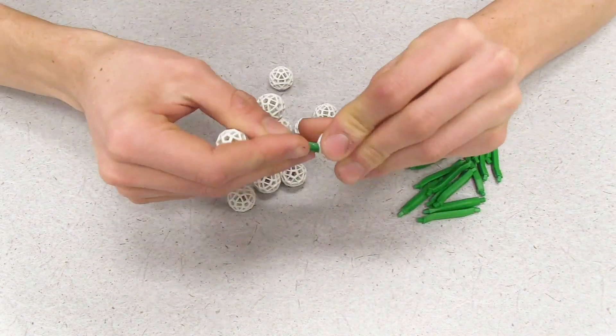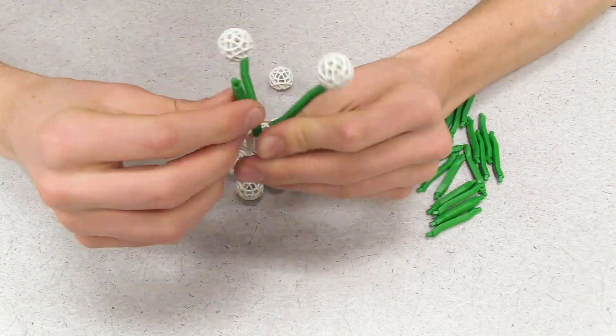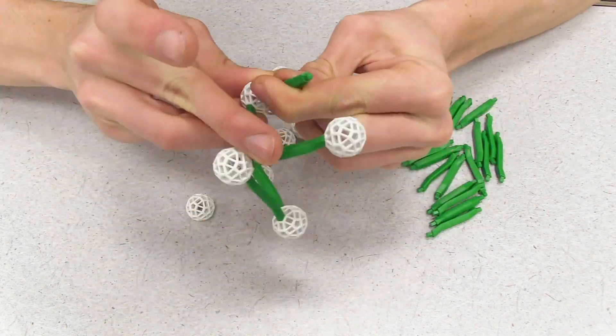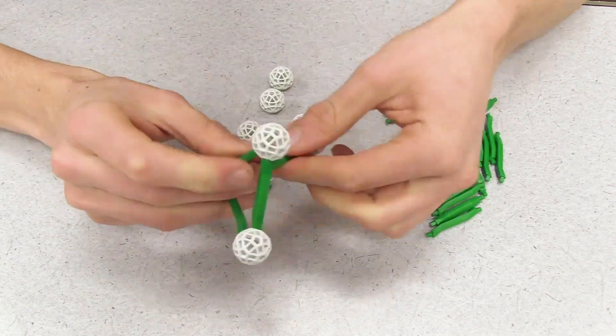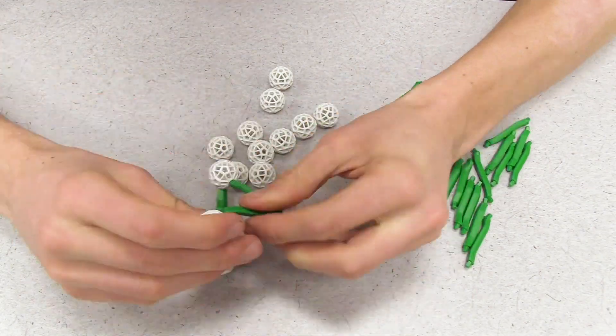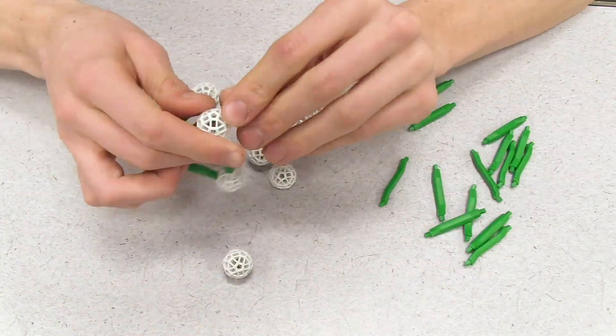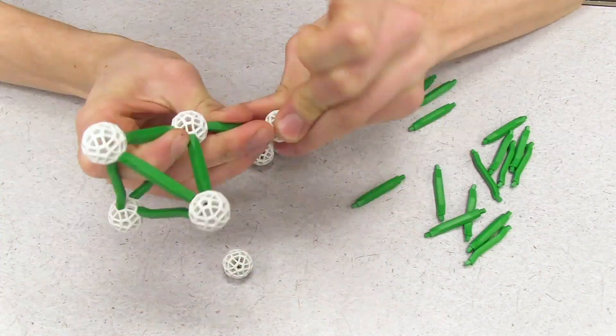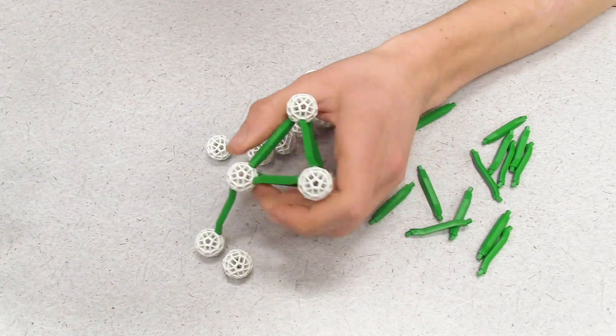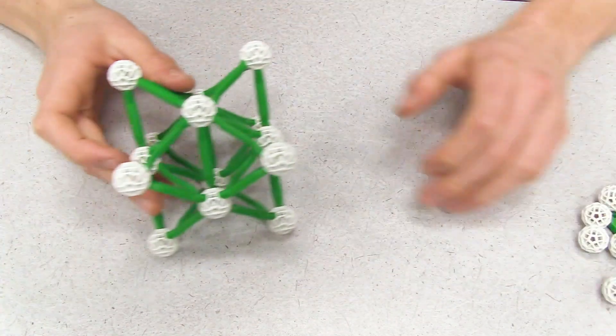For face-centered cubic, it's going to be a little more involved. We'll start with the corner of a cube and form tetrahedra to other balls, which themselves will form tetrahedra to another corner of a cube. If we iterate through this process, we eventually end up with a full face-centered cubic lattice.